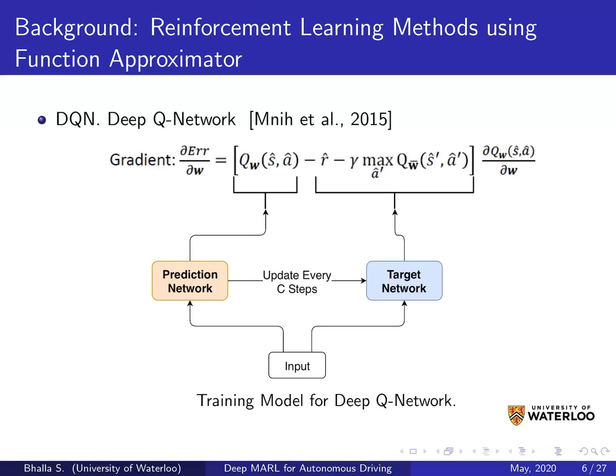A little background on reinforcement learning methods. We start with DQN because it is used as the baseline method for all the algorithms proposed in this paper. In DQN we have a prediction network and a target network. The prediction network is a deep neural network which predicts a Q value for a given state-action pair. The target network, in conjunction with the reward received from the environment, generates the ground truth for the same state-action pair. The difference between the Q values is the error used for training the function approximators.